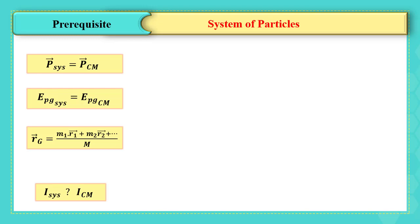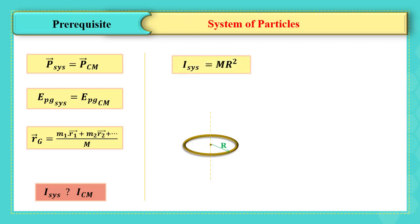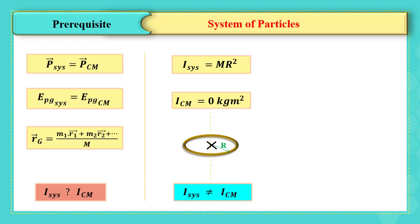Consider a hoop that rotates around its axis passing through its center. The moment of inertia of this hoop around this axis equals M·R². Since it is homogeneous, its center of mass is at its center, so the moment of inertia of its center of mass is zero, because R = 0. We find that the moment of inertia of the center of mass is not equal to the moment of inertia of the system of particles.